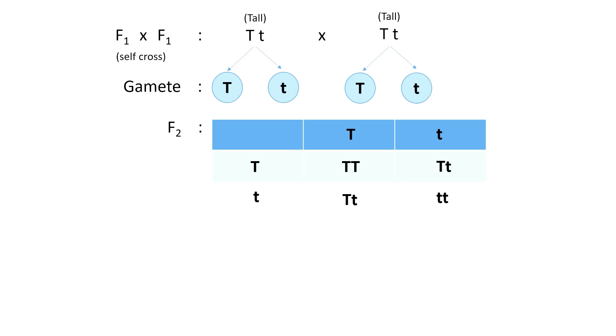Then, write down the genotypic ratio of the F2 generation. From the Punnett square, we identify the genotypes: capital T capital T, capital T small t, and homozygous recessive small t small t, giving a ratio of 1TT:2Tt:1tt.